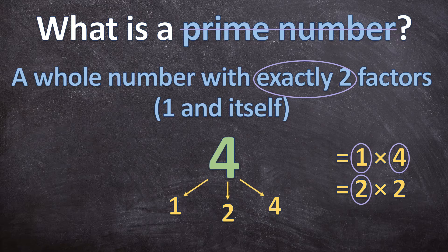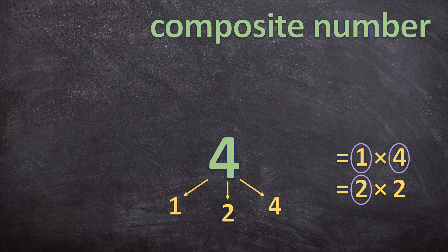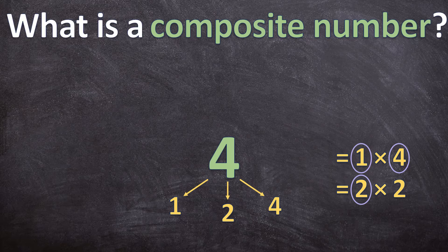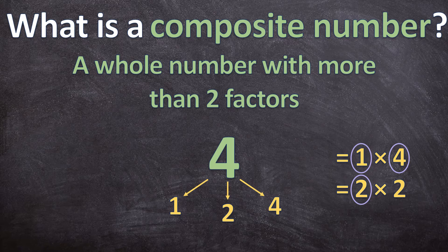But then what type of number is 4? 4 is a composite number. A composite number is a whole number with more than 2 factors. So it doesn't have exactly 2 like a prime number, but it has more than 2.